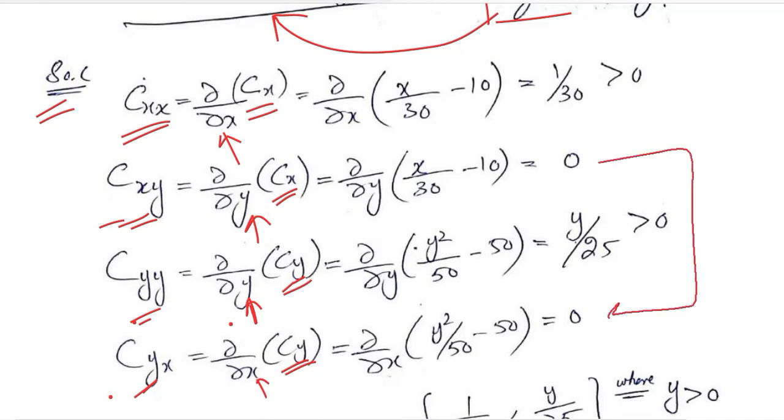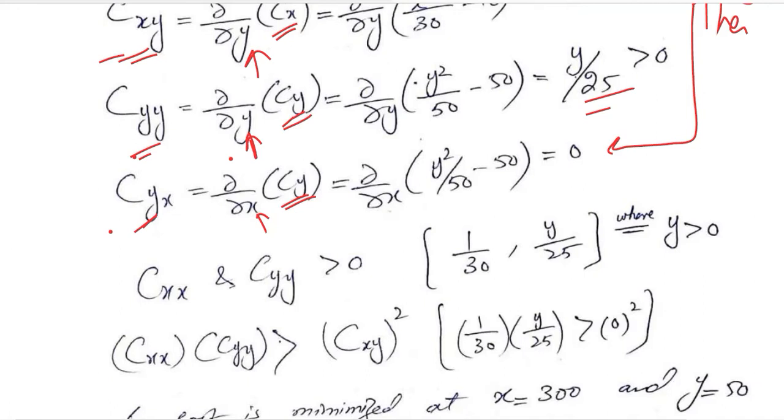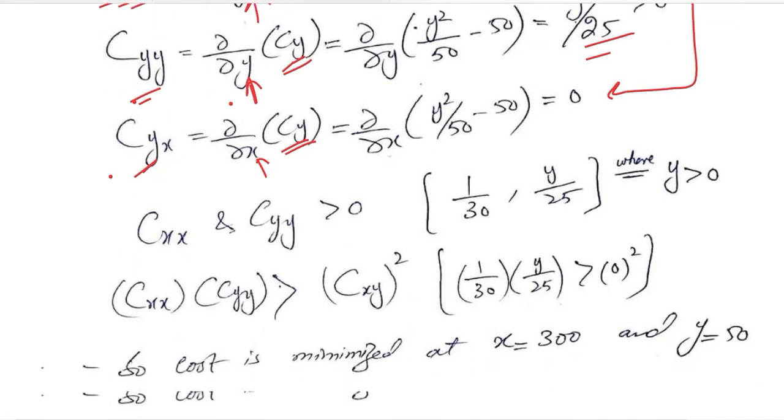These two should be equal because of Young's theorem. However, they are not equal because they are different cross partial derivatives. Both of them are positive because one of them is 1 over 30, which is a positive value, and the other is Y over 25.